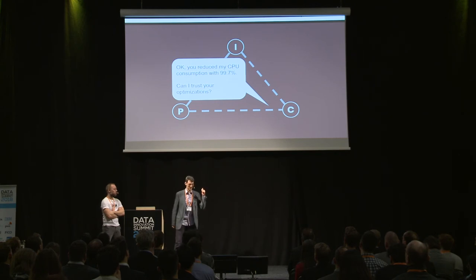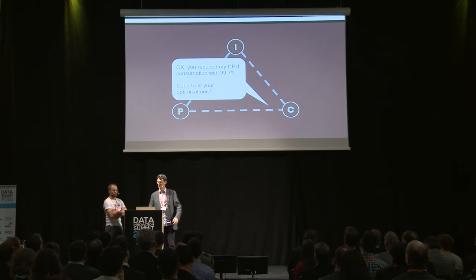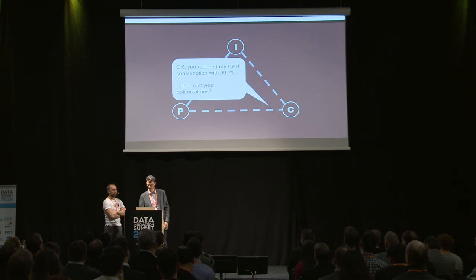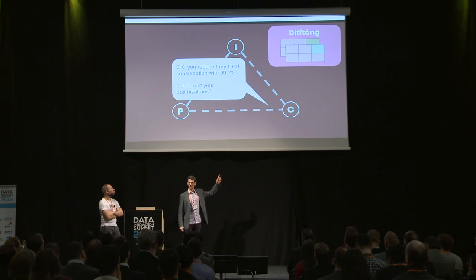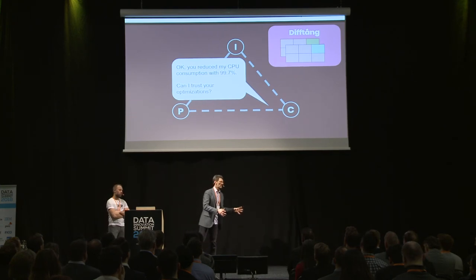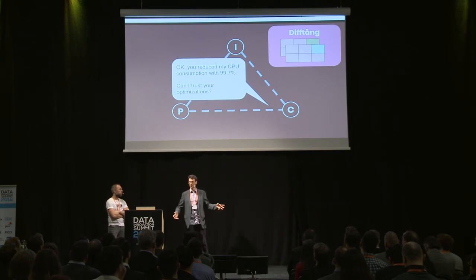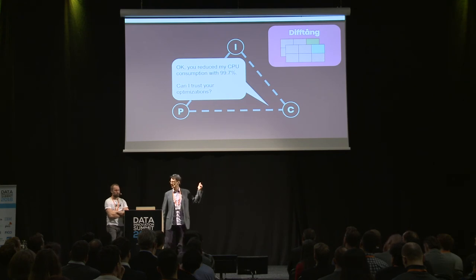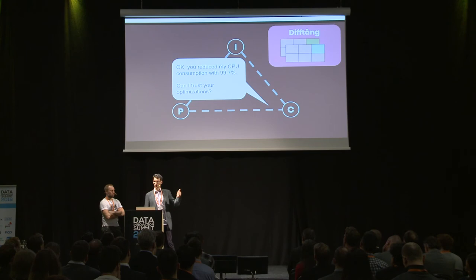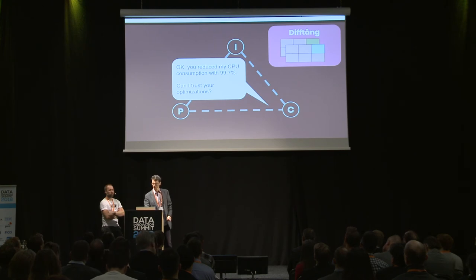If we manage to reduce CPU consumption to almost nothing — which happened last week, a month ago, and will happen again — the question is whether the analyst can trust the optimizations we propose. Enter tooling: we made a tool called DiffTong that compares one Hive database with another. Since this is big data, we might be comparing a few terabytes row by row, number by number, cell by cell. You need to pay special attention to scalability and complexity, but this has proven to be a super powerful tool.